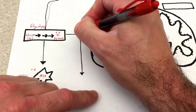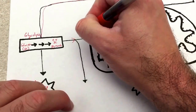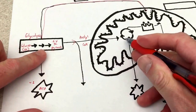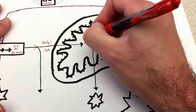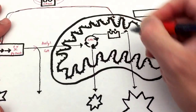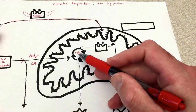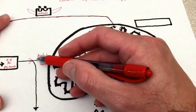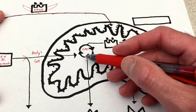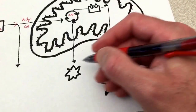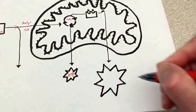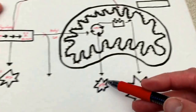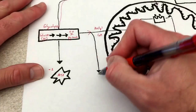Pyruvate has to be turned into acetyl-CoA before it can go into the matrix and be the substrate — the wood to the fire — for the citric acid cycle. So acetyl-CoA enters the citric acid cycle. From this process, we get a little bit of ATP — not a whole lot. Glycolysis gives us a little ATP; the citric acid cycle gives us a little bit of ATP.